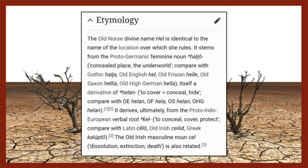The word derives ultimately from the Proto-Indo-European verbal root 'kel' — K-E-L — meaning to conceal, cover, or protect. Compare with Latin 'cēlō,' Old Irish 'cel,' and Greek 'kaluptō.' Notice how it went from K-E-L to K-A-L — that shift is important. The Old Irish masculine noun 'cell' means dissolution, extinction, and death. All of these words — including 'conceal' and 'seal' — are derivatives of the same root concept as hell.